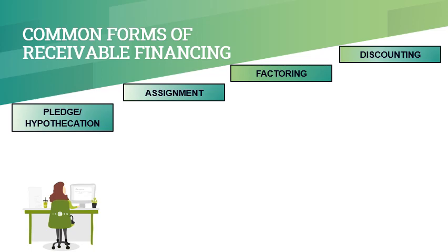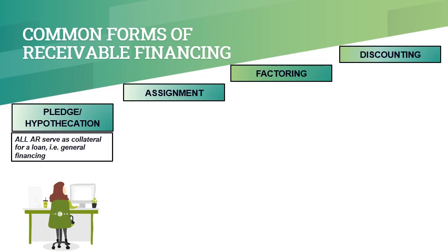Pledge or Hypothecation involves making all of an entity's accounts receivable as collateral for a loan. When the entity collects on the receivables pledged, the entity then turns over the collections to the bank or lending institution. Among the four forms of Receivable Financing, pledge is the easiest to account for since it requires only a disclosure in the notes to financial statements. No journal entry is required.